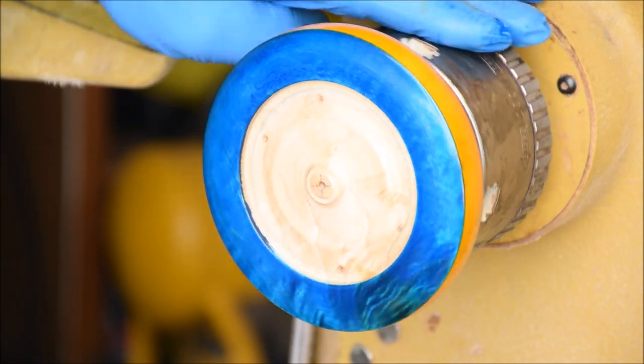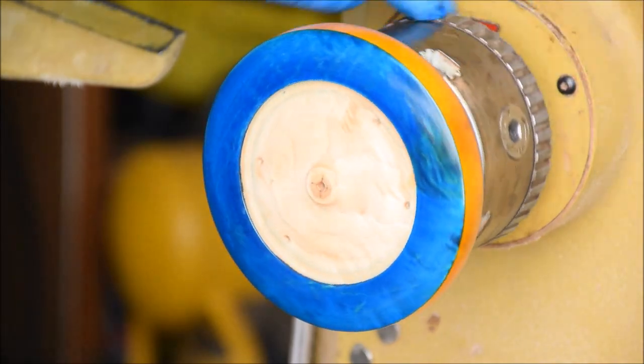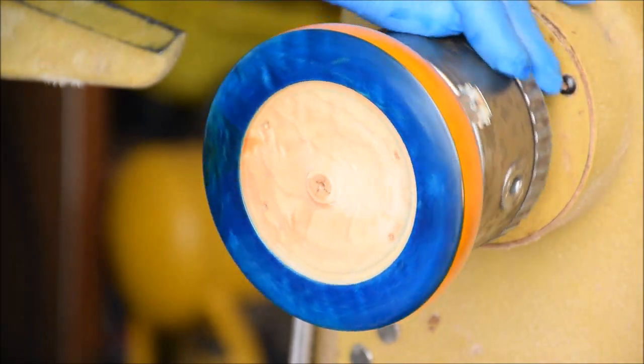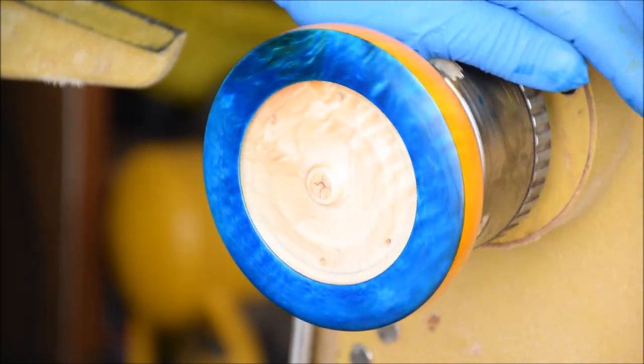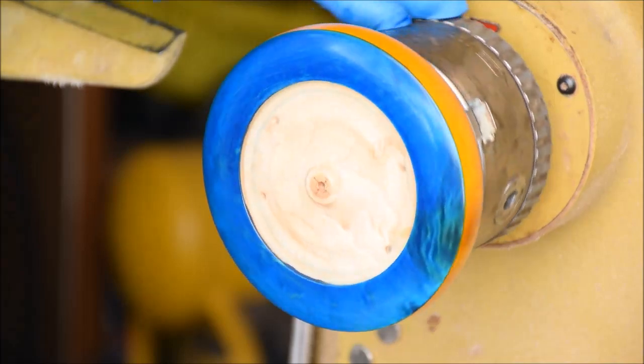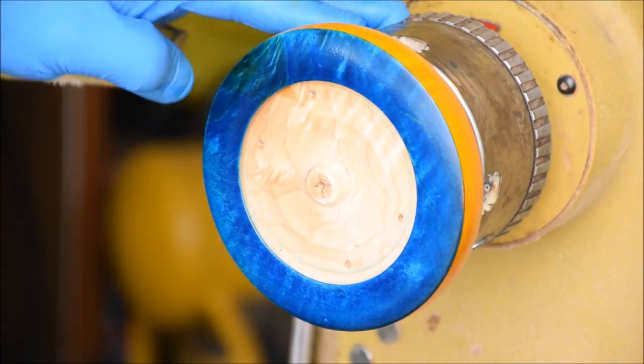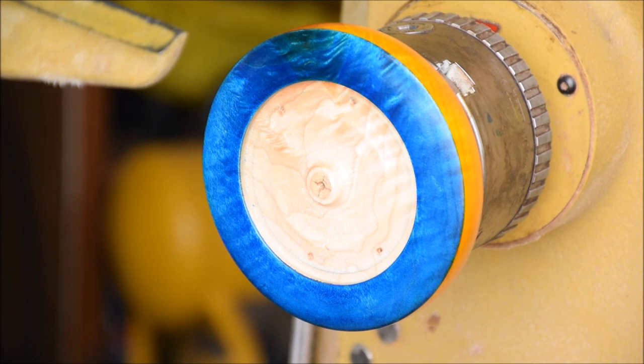So hopefully you can see some of the blue chatoyance. Hope you're enjoying that. I'm going to let this dry. Put a couple more coats with de-nibbing in between. And then I'll check back in with you as I start to hollow this piece out.